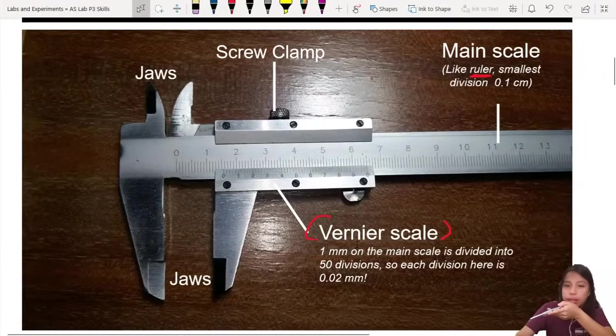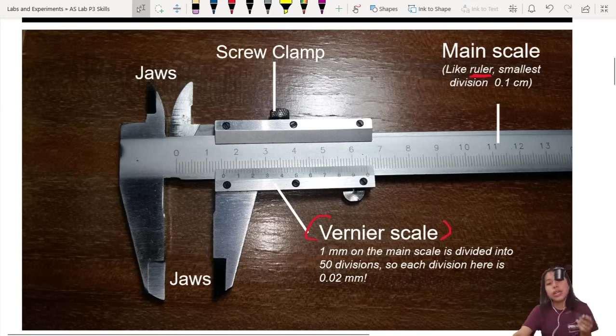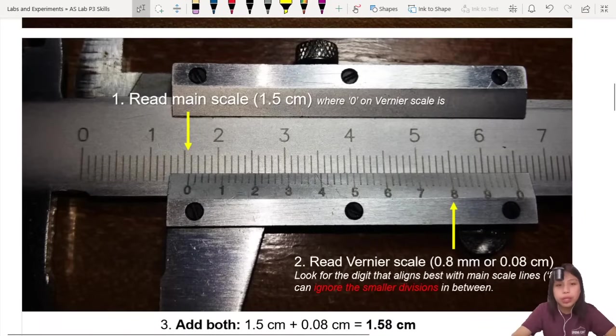You see, vernier scale, if one millimeter in the whole thing is this whole thing, cut into 50 divisions, means its division must be 0.02. So this is MCKL's vernier caliper. It's extra sensitive. But how do you read it? Okay.